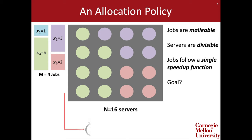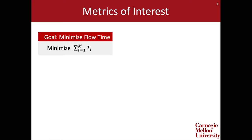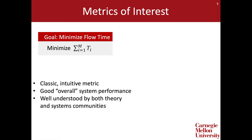For each job, we'll define a flow time t sub i to be the time until job i is completed. This gives rise to several intuitive metrics. People have historically considered the goal of minimizing total flow time, equivalent to average flow time in our case where jobs are present at time zero. This is a classic, intuitive metric for minimizing the average time jobs spend in the system. Because it gives all jobs equal weight, this is a good metric for maximizing overall system performance, and it has the added benefit of being well understood by both the theory and systems communities.